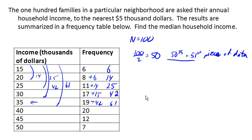And so both the 50th and 51st pieces of data were 35,000. And the mean of 35,000 and 35,000 is also 35 thousand. And so here the median income in this neighborhood is 35,000.